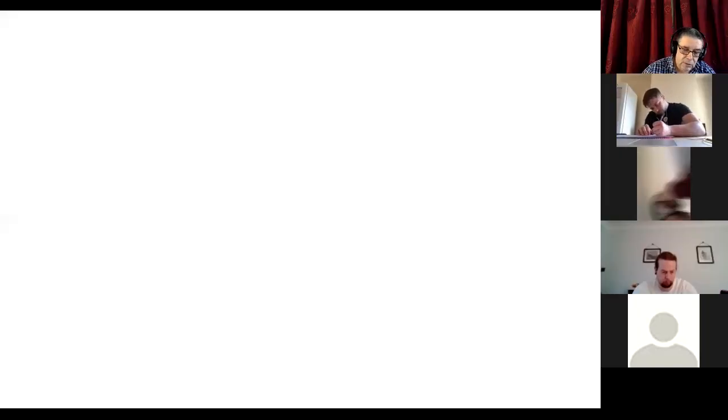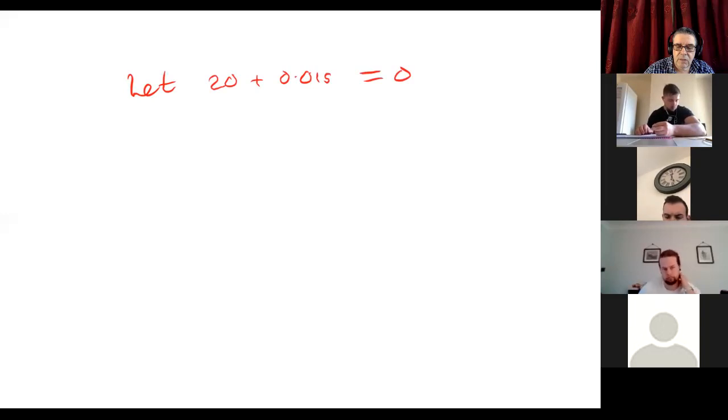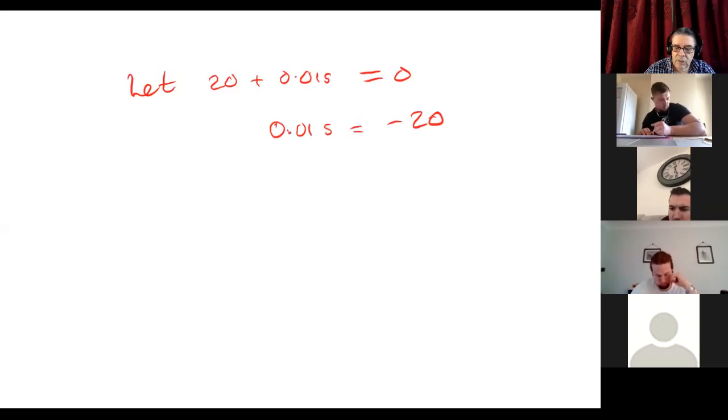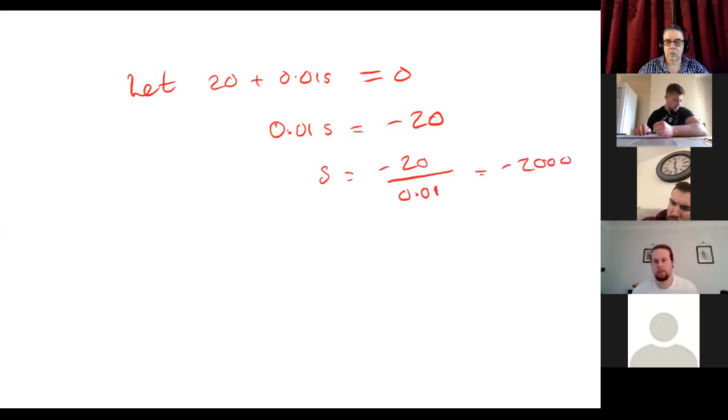So what you're doing is saying we're going to let 20 plus 0.01S equals 0. We want to find out what S is so we can plug that back into the right-hand numerator. So we need to take 20 from both sides, so we can say 0.01S equals minus 20. And then if we divide through by 0.01, we get S equals minus 20 over 0.01. Or if we divide 20 by 100, we get minus 2,000. All right, okay.